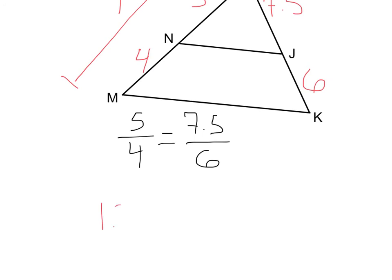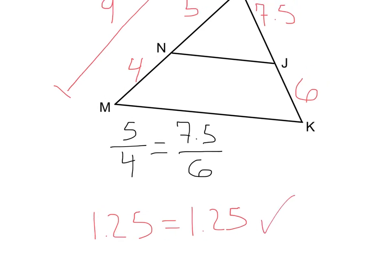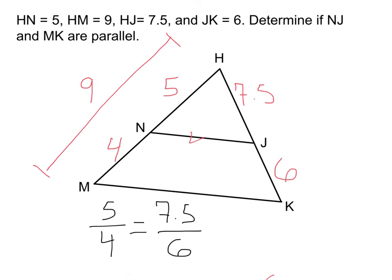If we did 7.5 divided by 6, that's going to be 1.25. Now this is just one way of doing it. You could have also cross-multiplied. But this is true 100%. So that means that these lines are parallel. Again, if it was not true, if this proportion we set up was not true, these would not be parallel.